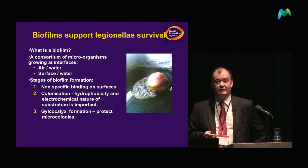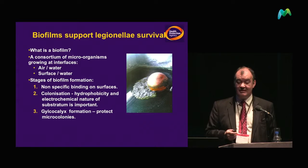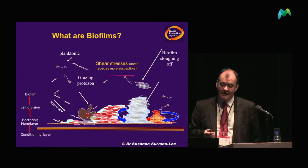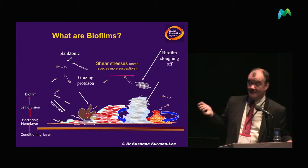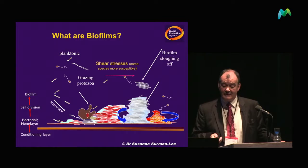Biofilms are a really key element when looking at Legionella in an environmental situation. Basically, you get an initial conditioning layer, then a bacterial layer develops on top of it, and eventually over a period of time you get a biofilm. This schematic picture shows some of the features of a biofilm and why it is such a problem in trying to manage.